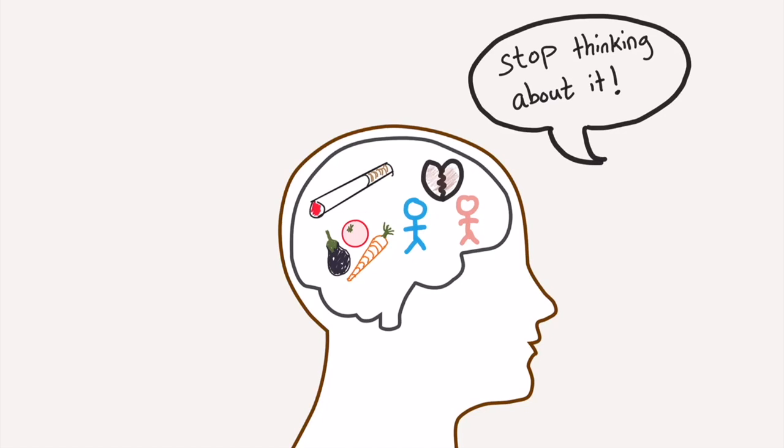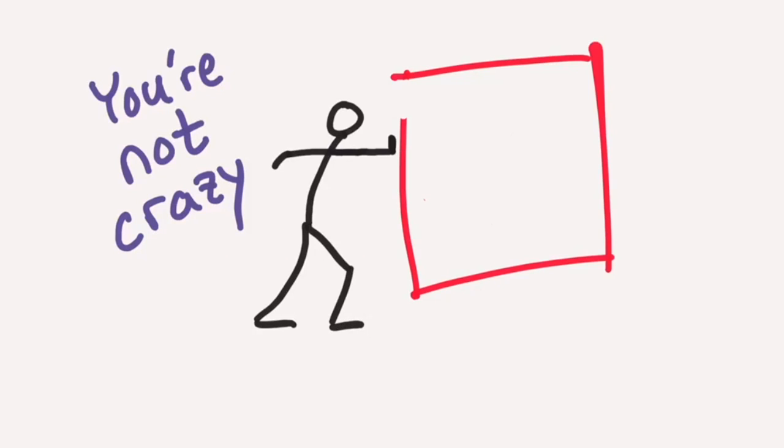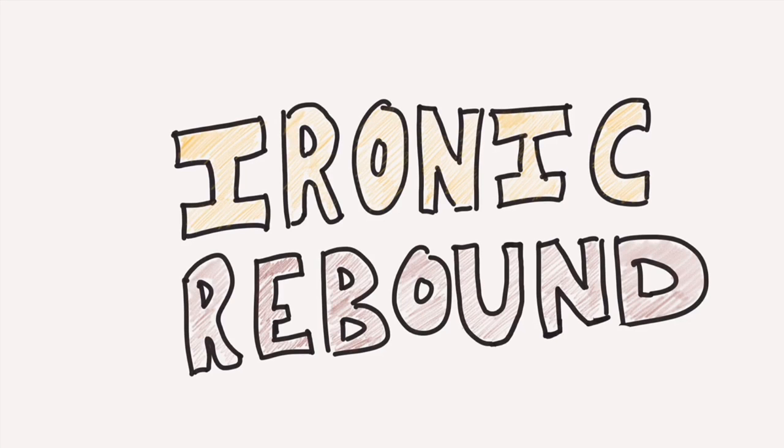So why is it so hard to suppress unwanted thoughts? And what can we do to clear our heads? Well, the good news is that you're not crazy. It's universal. Research has found that the more you try to push a thought out of your head, the more likely that thought is to pop right back up. This is called ironic rebound.